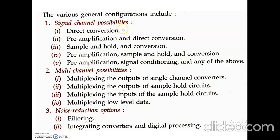The second general configuration is the multi-channel data acquisition system. Here, an important additional stage is multiplexing, where multiple signals are mixed to form a single signal. The sub-types include: multiplexing the outputs of single-channel converters, multiplexing the outputs of sample-and-hold circuits, multiplexing the inputs of sample-and-hold circuits, and multiplexing low-level data. The third general configuration is the noise reduction data acquisition system, which includes two types: filtering with integrating converters, and digital processing.